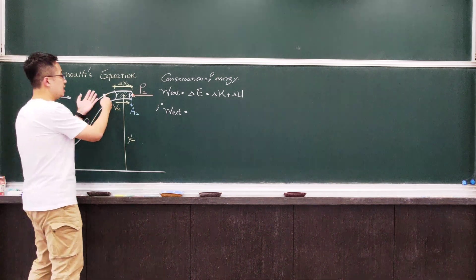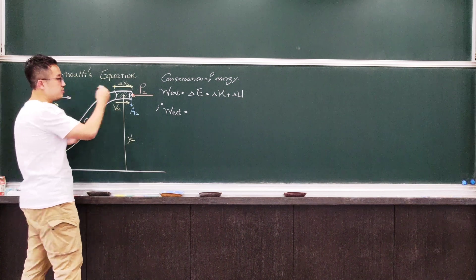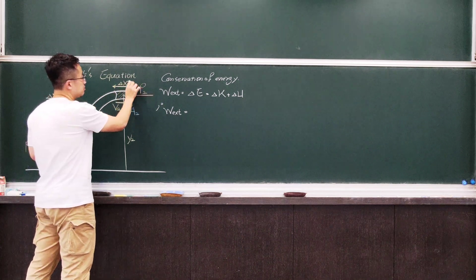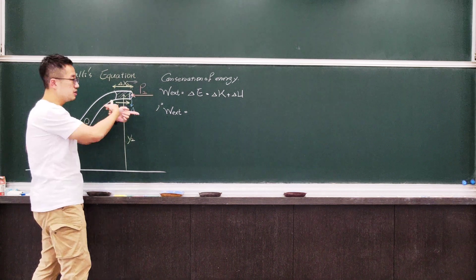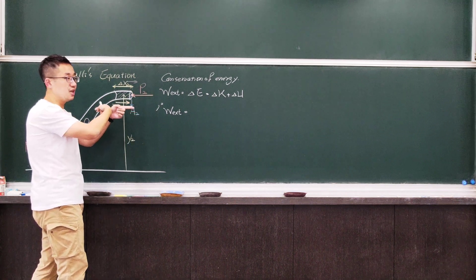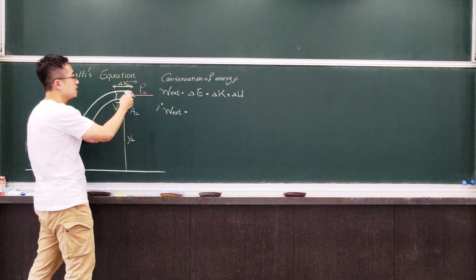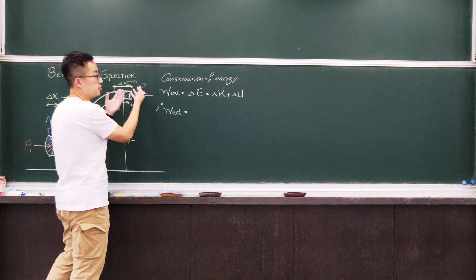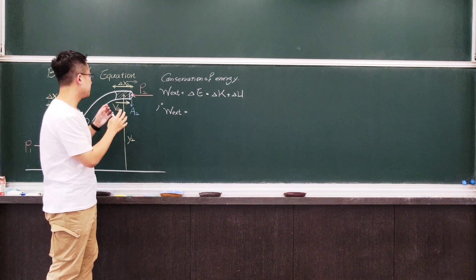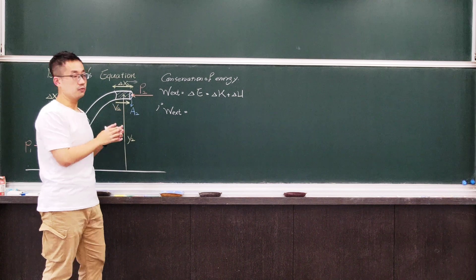Let's look at another point — let's say this is point B. At point B, the pressure is now pointing to the left. However, the displacement is now pointing to the right. So they are pointing in opposite directions, 180 degrees apart from one another. So the force F2 caused by pressure P2 should do negative work.